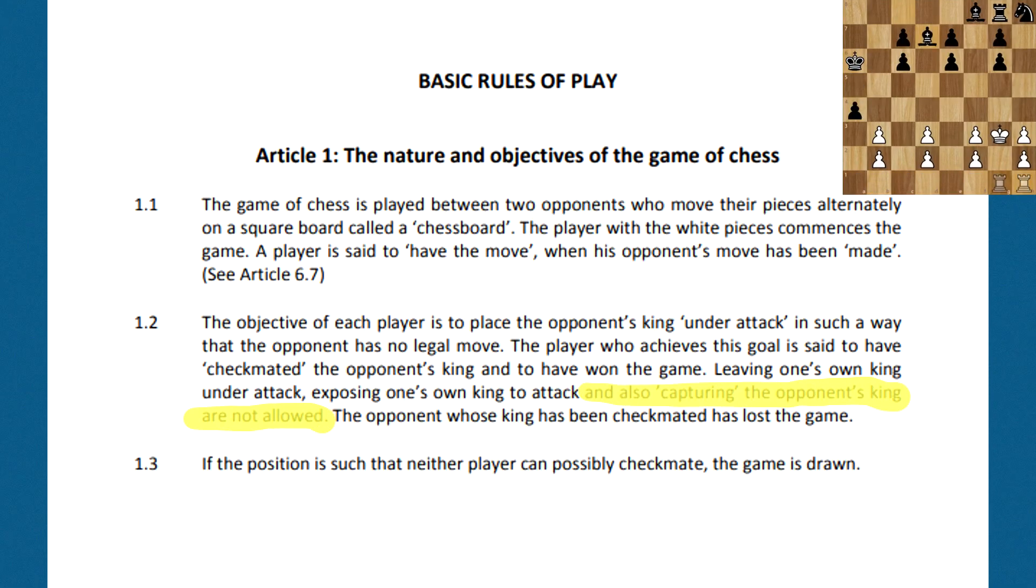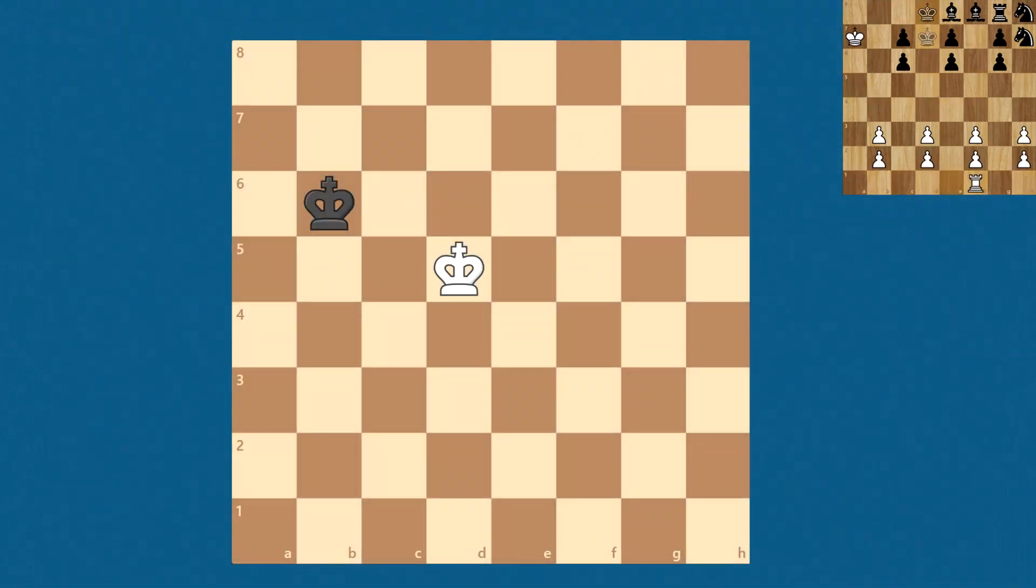They cannot be captured unless they are being checkmated, which even then, you do not see an actual checkmate occur as the game ends if the opponent has no defensive moves to respond to a check. Because of this, the final desired position is to have only the two kings remaining on the board with the other 30 being captured.